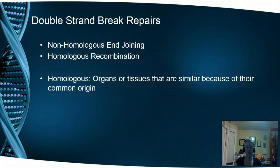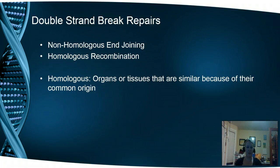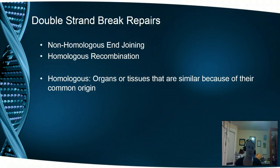The biggest problem with double-stranded breaks is that they can result in a huge gap of genetic information. Before we move on, we need to do a vocab check to make sure you understand what homologous means. Homologous refers to organs or tissues that are similar because of their common origin. So when we talk about homologous recombination, we're talking about chromosomes that may not have the exact same genetic sequence, but are very similar — like chromosome 1a and chromosome 1b. They're homologous because they're similar, but not necessarily identical.